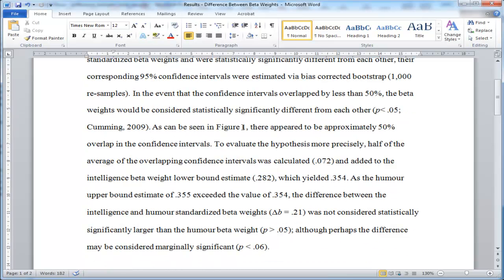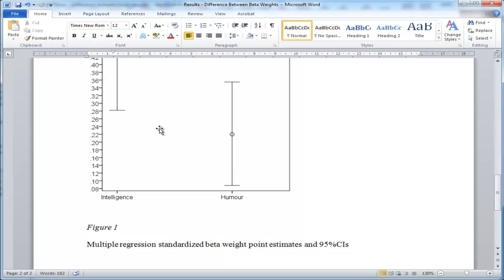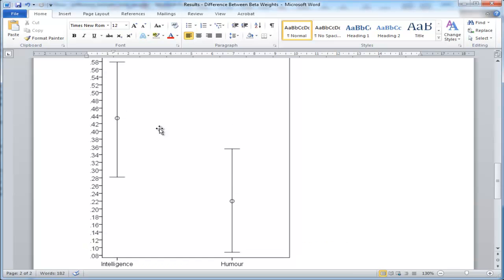As can be seen in Figure 1, there appeared to be approximately 50% overlap in the confidence intervals. Whether you'd actually report this graph or not may be subject to your discretion. This is what it looks like if you did create a graph like that.